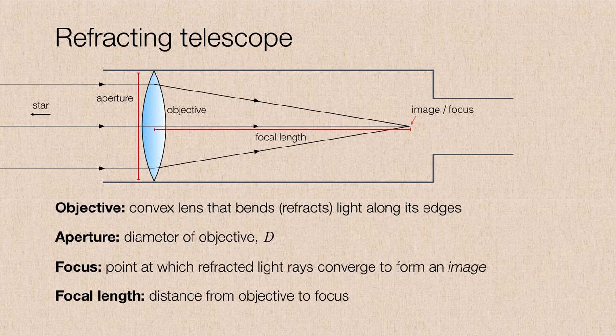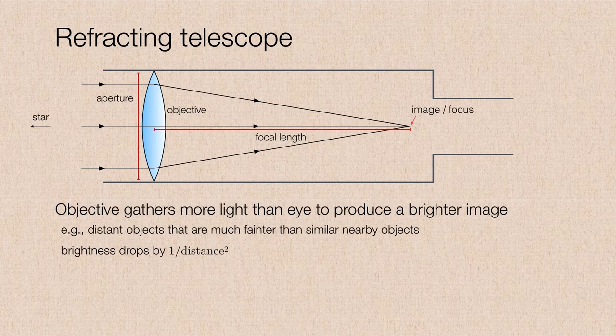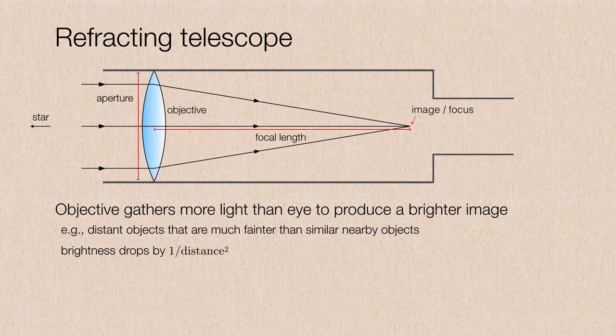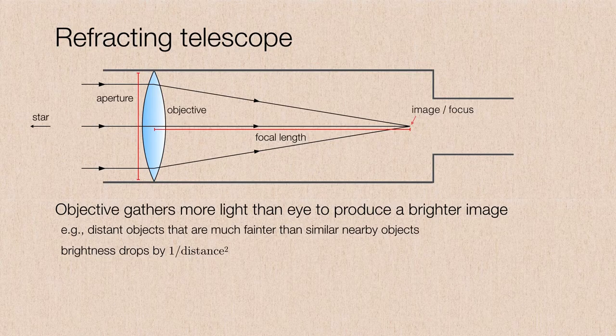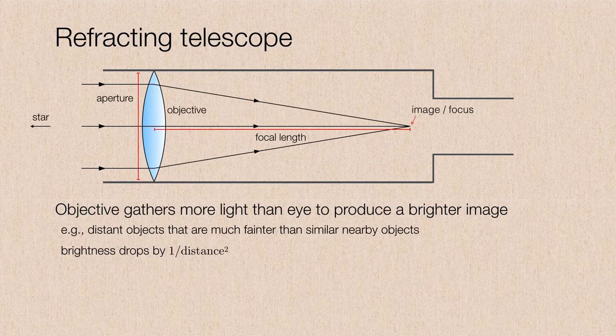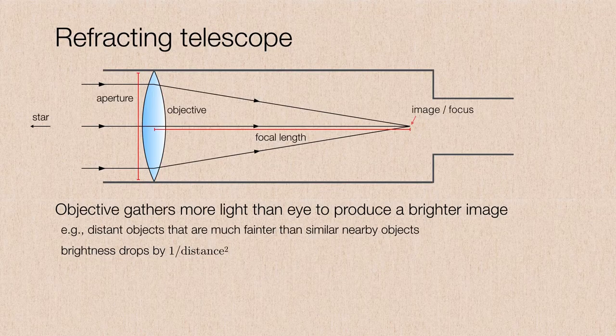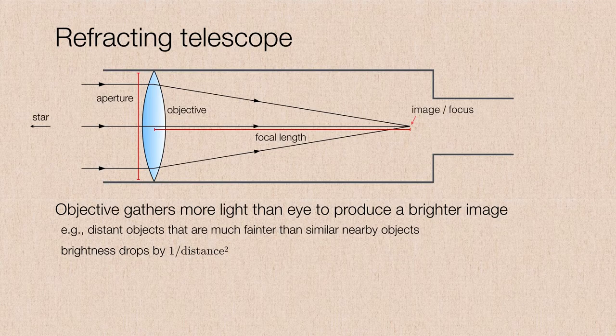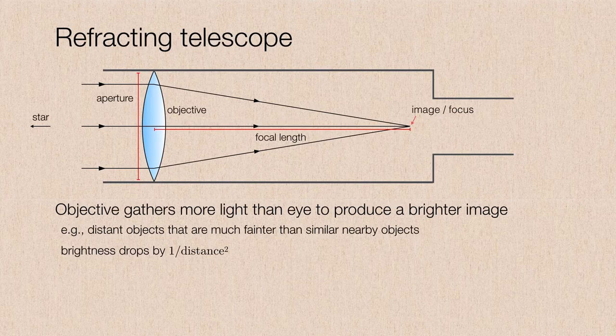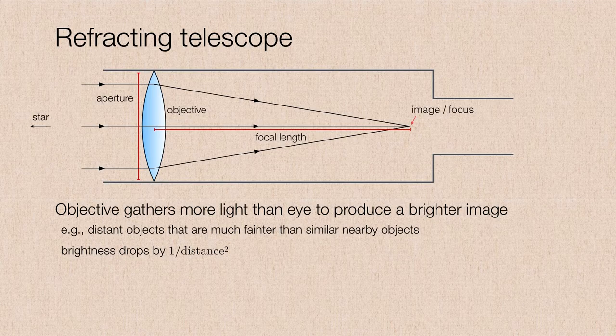So what is the purpose of the objective? Well, it's simply to capture more light than the eye can produce and therefore produce a brighter image. Now, we've already shown that brightness drops by one over the distance squared. So the more distant an object is, the fainter it's going to be. Therefore, a large aperture objective can gather that much more light and form a brighter image. And this is particularly useful for stars, which are very dim compared to everyday objects that we look at during the daytime.